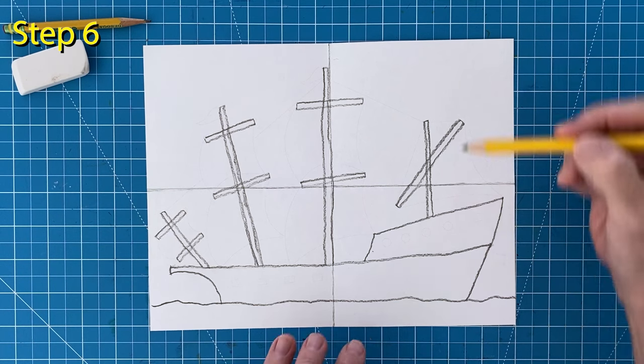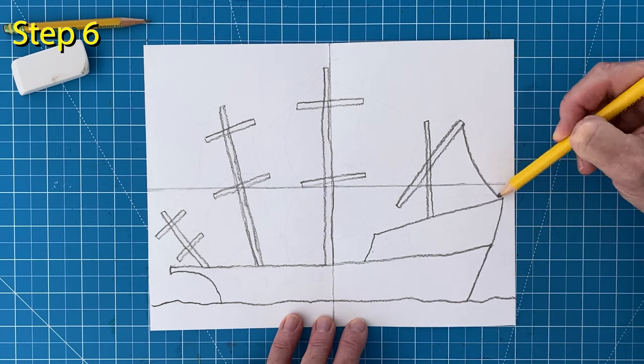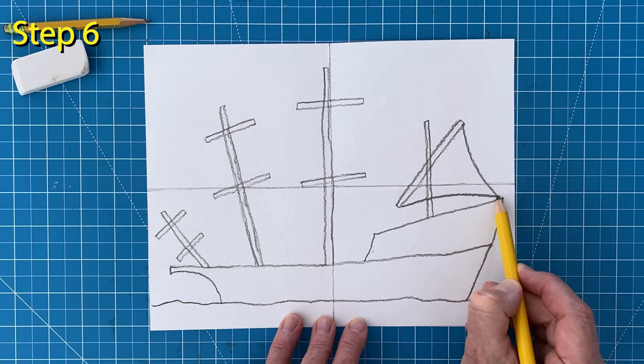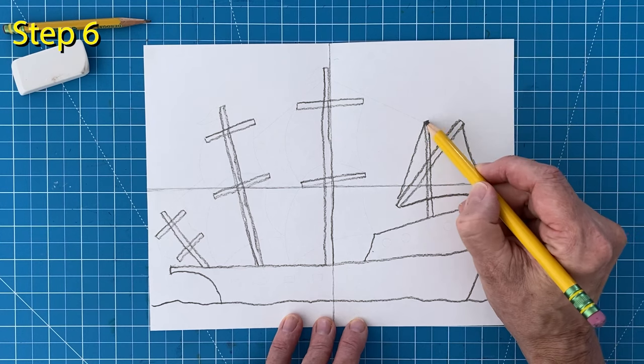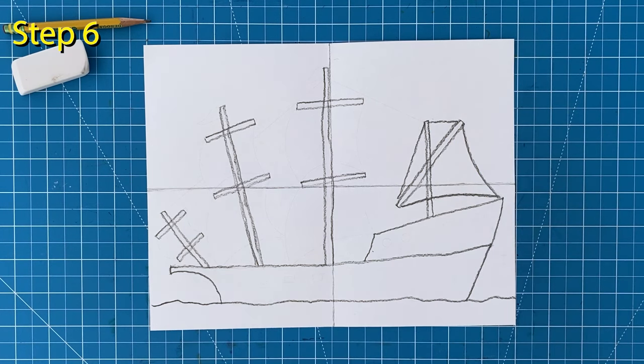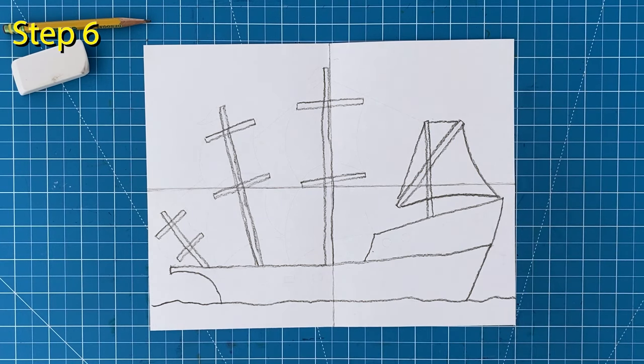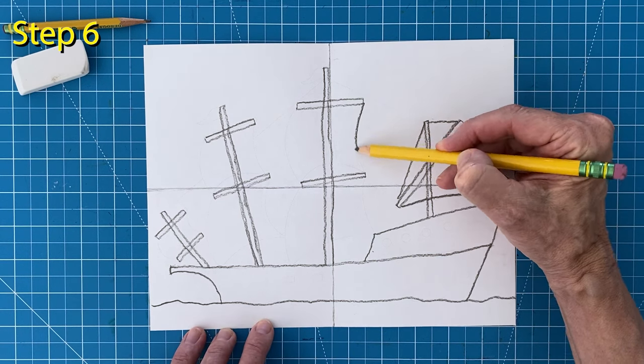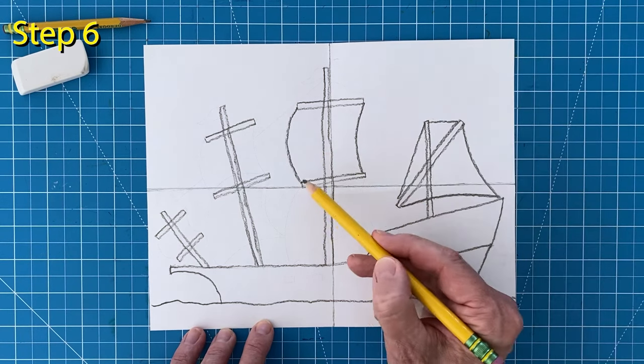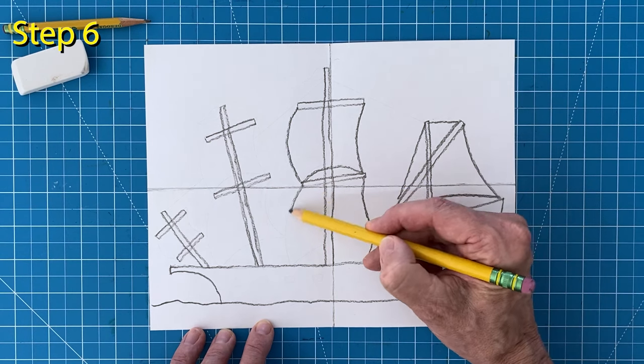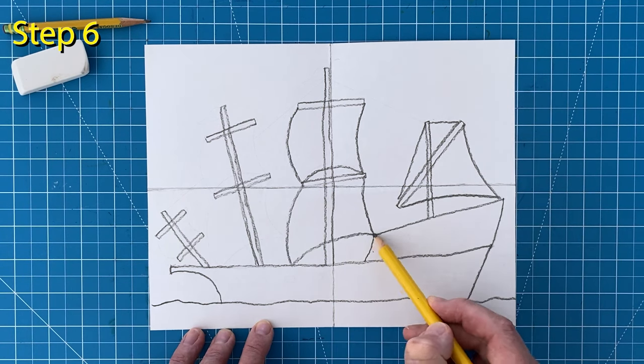Step number six. Now comes the fun part. Drawing the sails. First is the triangular one on the right. Then the large sail on the center top. And another sail below that. Notice that the points are all touching some part of the ship to show they are tied down.